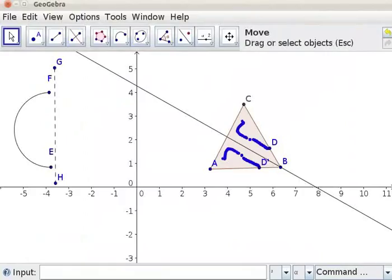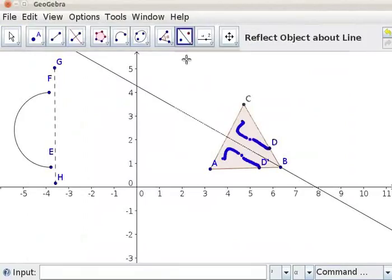Select Reflect Object About Line tool from the toolbar. Click on the semicircle EF. Click on the line GH. This will produce the reflected image E dash F dash on the other side of line GH. What does the figure look like now? It looks like a circle.